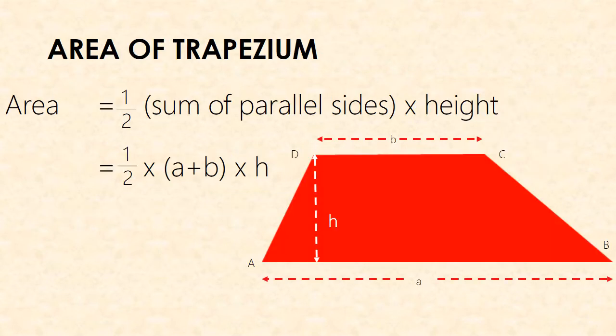Next, formula for the area of the trapezium. In this picture, we have the height and sides A and B. Both sides A and B are of different sizes. The area equals 1/2 times the sum of the parallel sides times height. The parallel sides are A and B, so the formula for area equals 1/2 times (A plus B) times H, where H is the height.